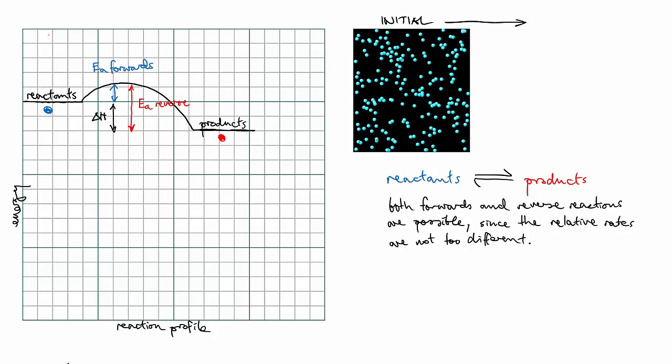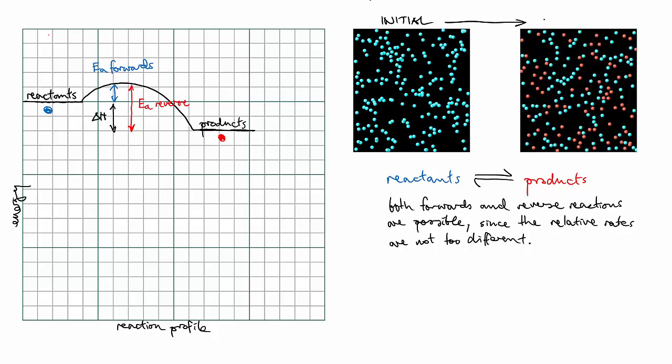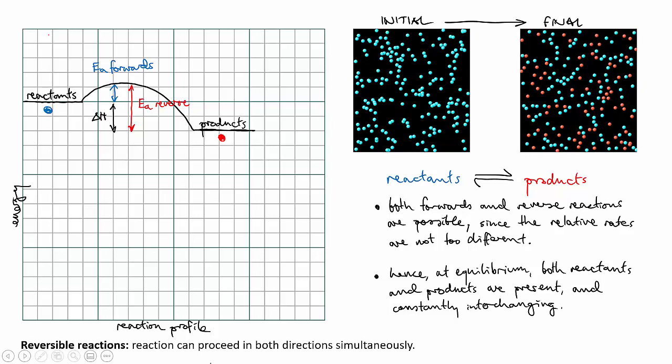If you were to start with only blue molecules, then, after a sufficient time, the sample would contain both reds and blues, since the forward and reverse reactions are both occurring, and this remains the case indefinitely. This type of reaction is called a reversible reaction, and it's these reactions that we study when we're looking at the phenomenon of equilibrium.